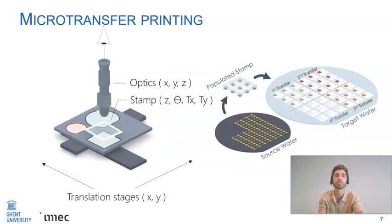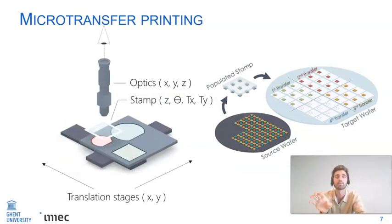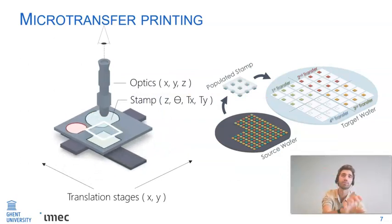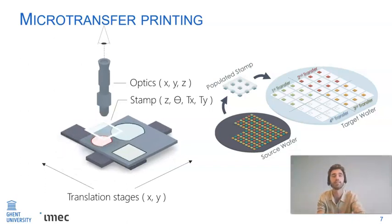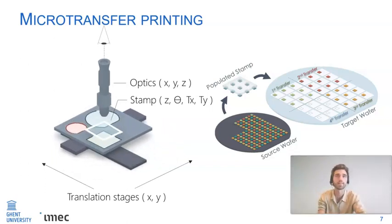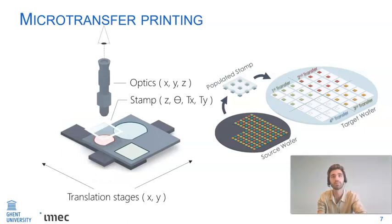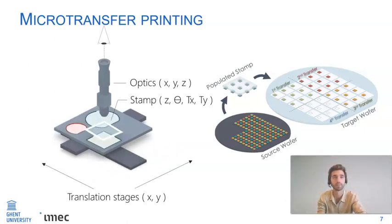This animation shows how a stamp picks up devices from the source sample, prints them on the target sample, and is then finally cleaned. This way, a target sample can be densely packed with multiple active device structures after printing.